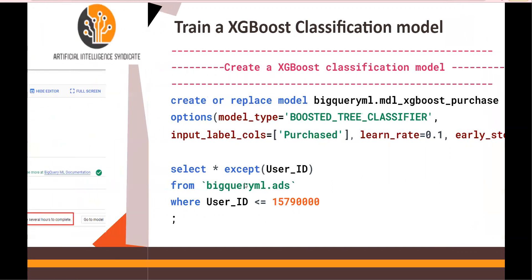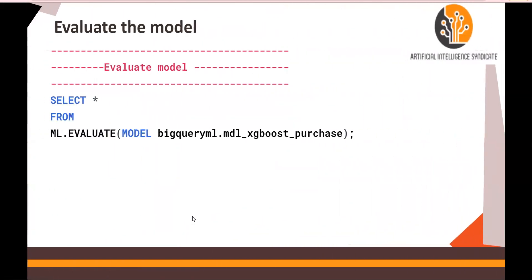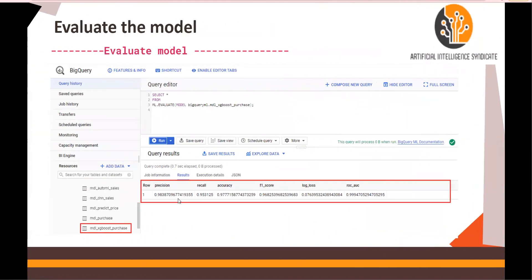Once the model is trained, you would see this model appear and then we will evaluate it. The evaluation will be done using SELECT * FROM ml.evaluate with the name of the model. Once we are satisfied with the evaluation parameters — like precision, recall, accuracy, F1 score, and other metrics — we move on.